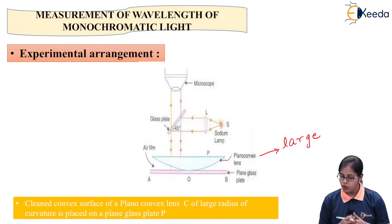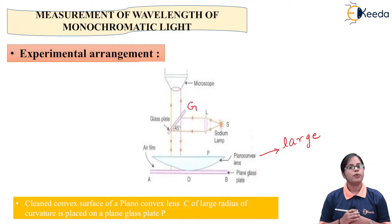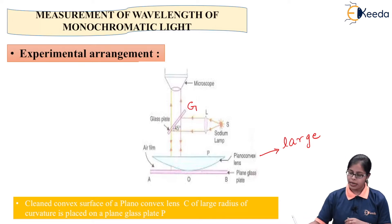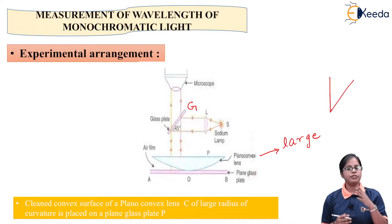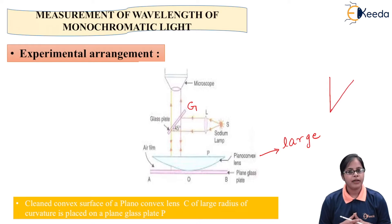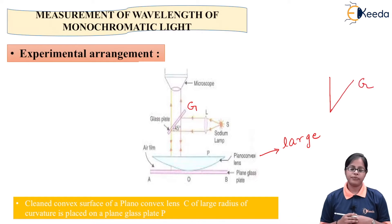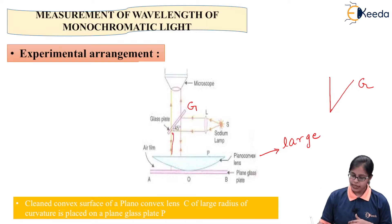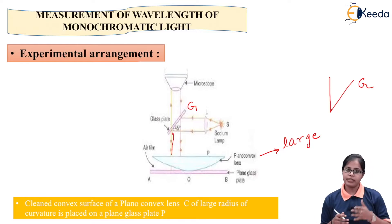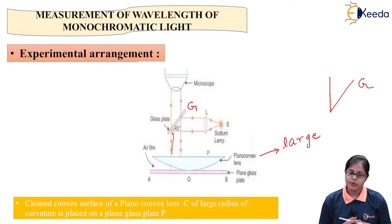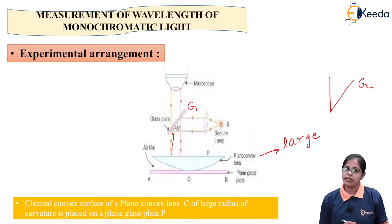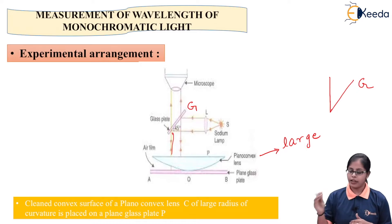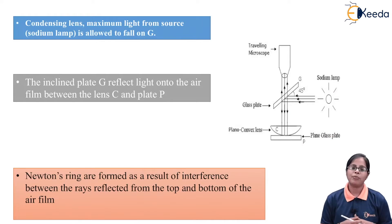In this arrangement we place one more glass plate, glass plate G, which is kept at an angle of 45 degrees with the vertical. We place this glass plate because we require normal incidence of light on the air film. Whenever a glass plate is placed at an angle of 45 degrees with the vertical, it is used to achieve normal incidence.